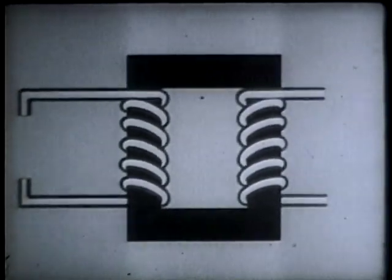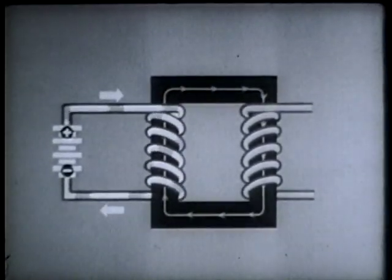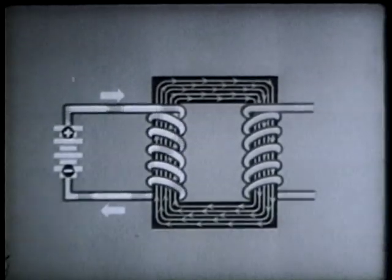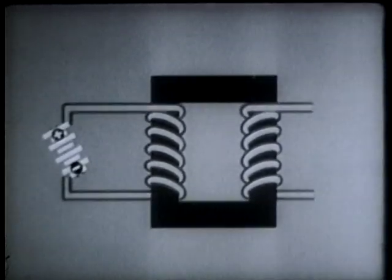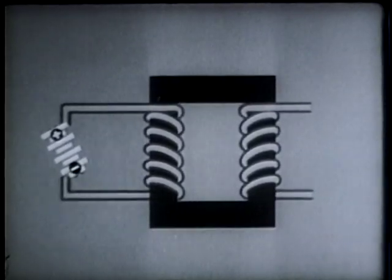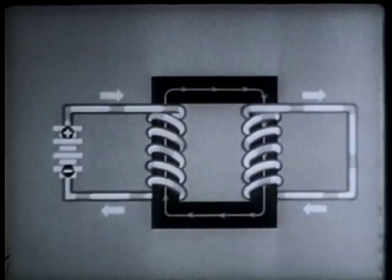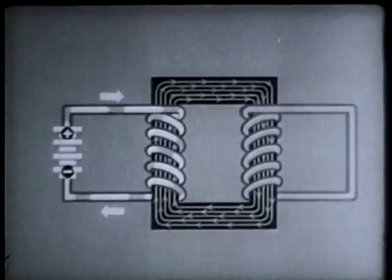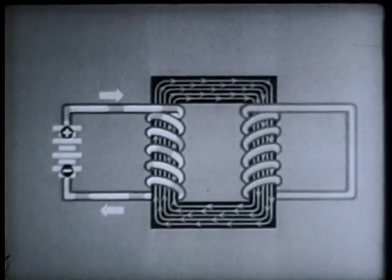Here's what happens when we send direct current through one of the windings. A magnetic flux builds up in the core. Now, let's see what happens when the other winding is part of a closed circuit. Current flows through it during the instant while the magnetic flux is building up. As soon as the magnetic flux reaches a steady value, however, this induced current disappears.